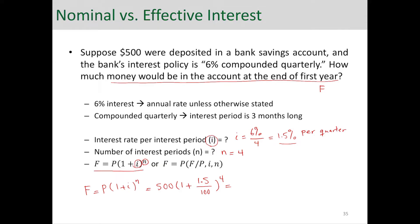As long as I and N are consistent with each other, we're always good. In this case, I is the quarterly interest and N is number of quarters — they have to match. So F would be equal to $530.68. That's the future value at the end of first year.